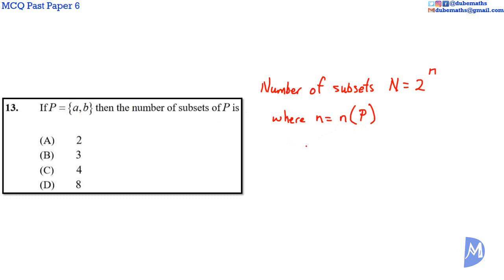So in this case, N, the number of elements in P, is equal to 1, 2. So the number of subsets N is equal to 2 to the power of n, 2 to the power of 2. The number of subsets is equal to 4. The answer is C.